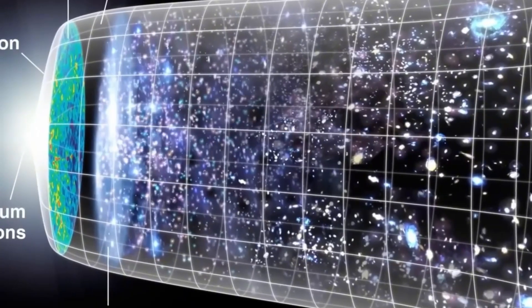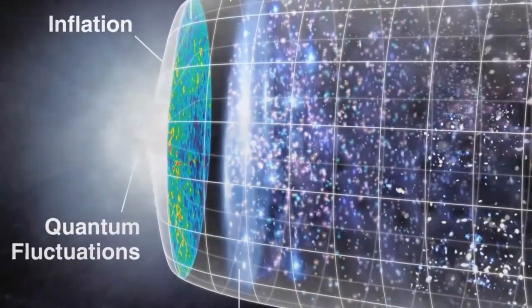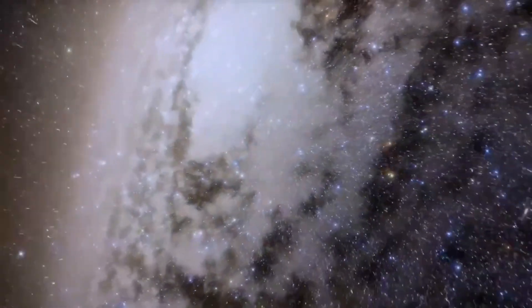Spectroscopy, on the other hand, analyzes the light at different wavelengths, revealing details about its temperature, chemical composition, and motion. Together, these methods create a comprehensive picture of Betelgeuse's behavior, shedding light on the processes driving its changes.